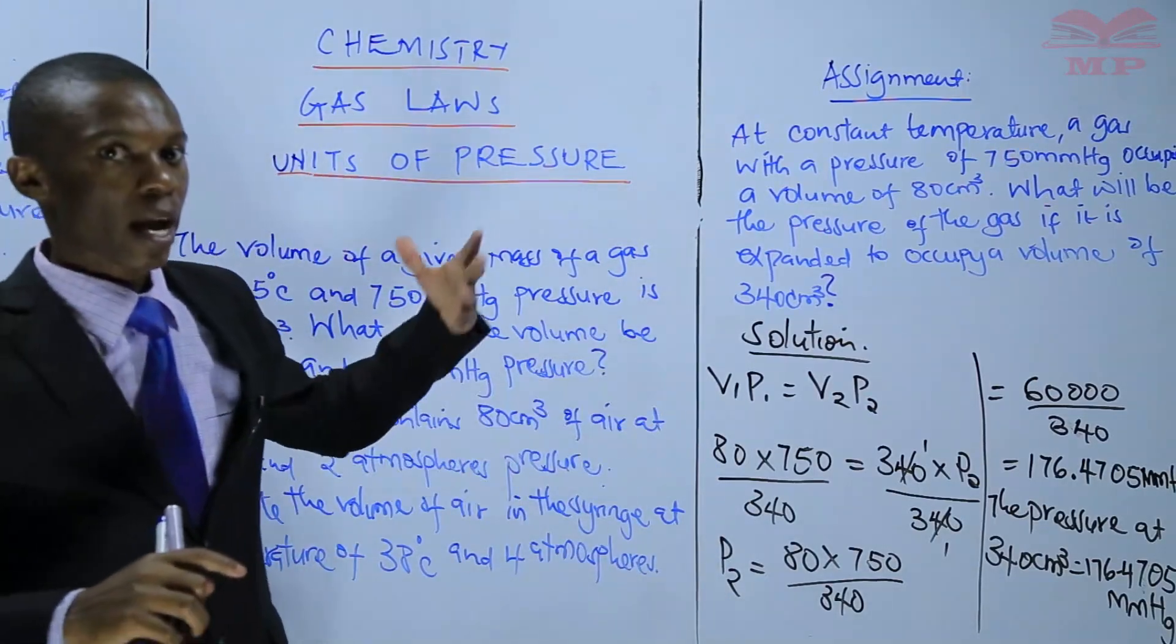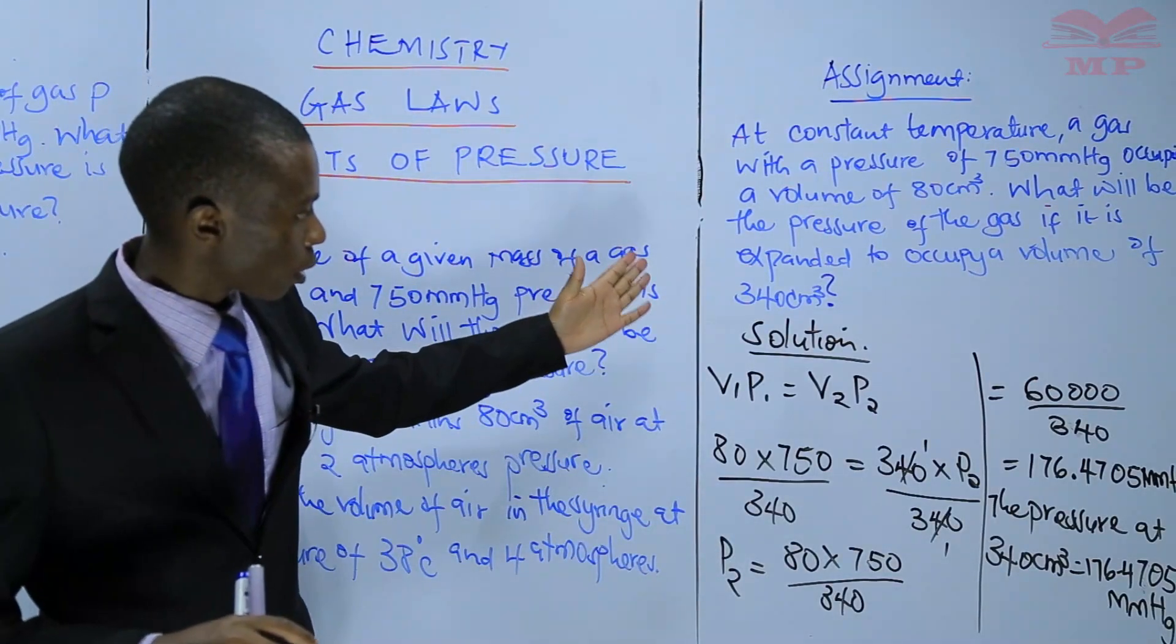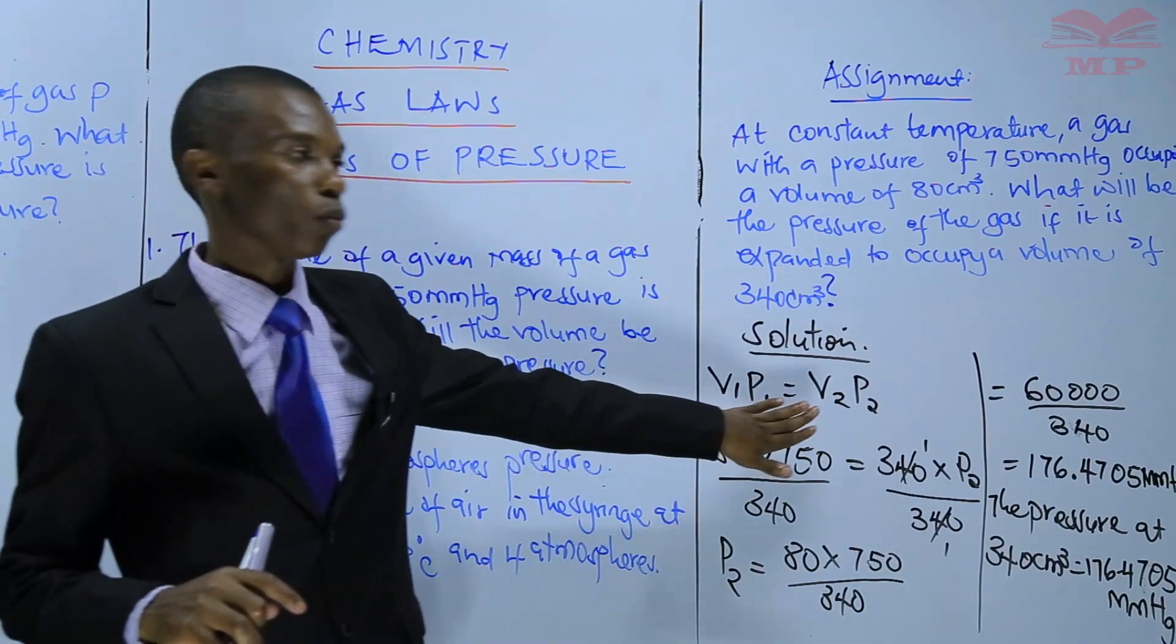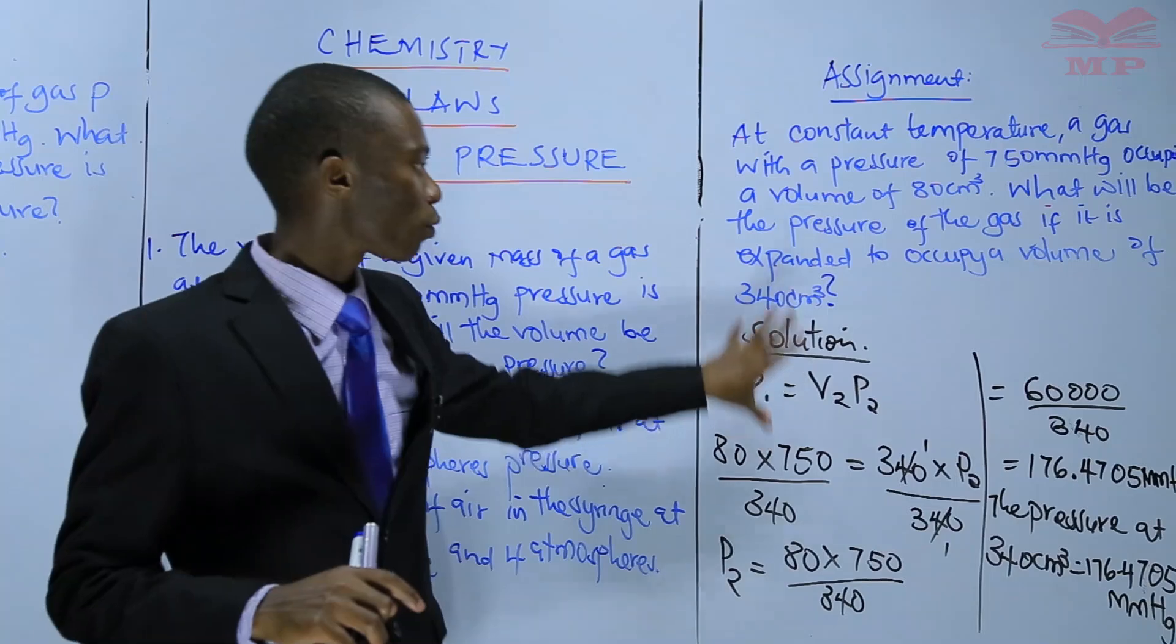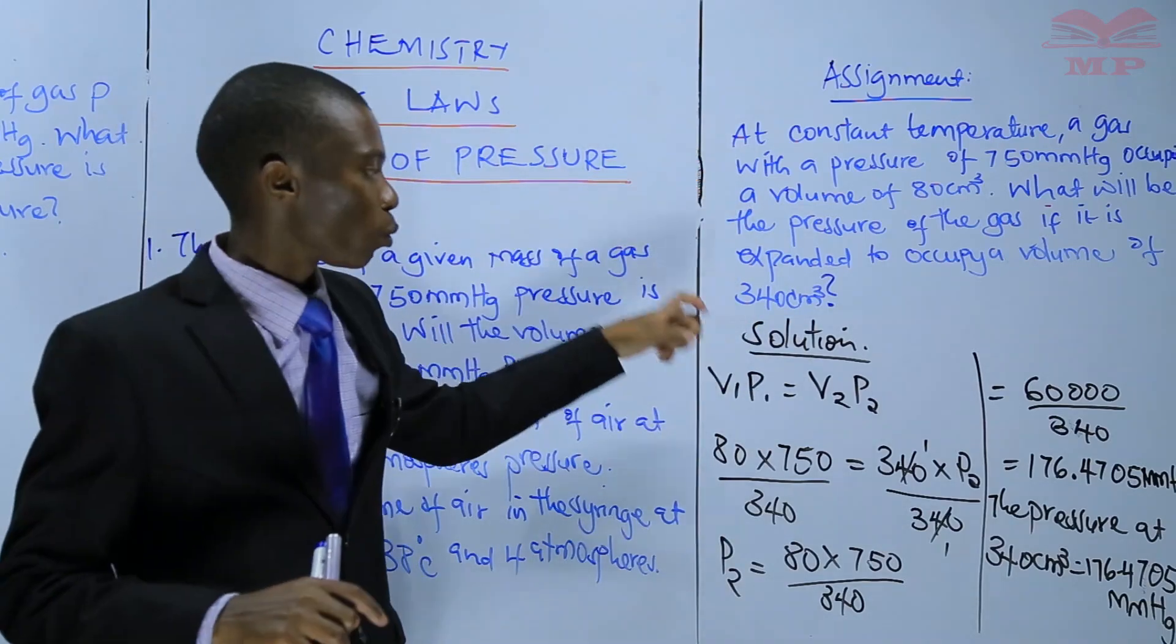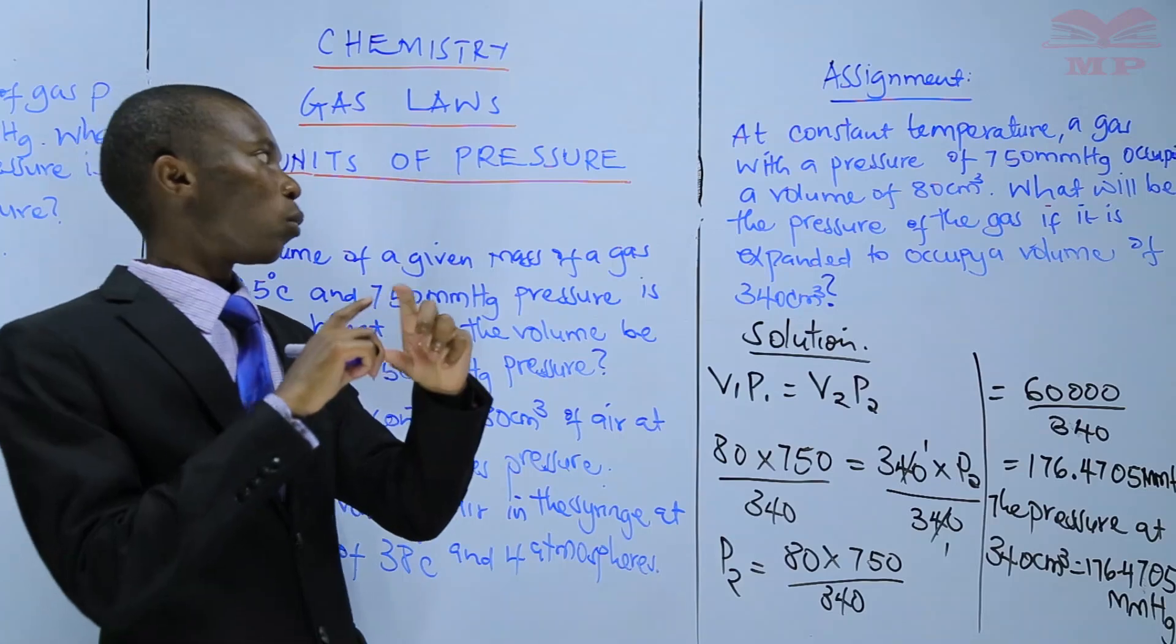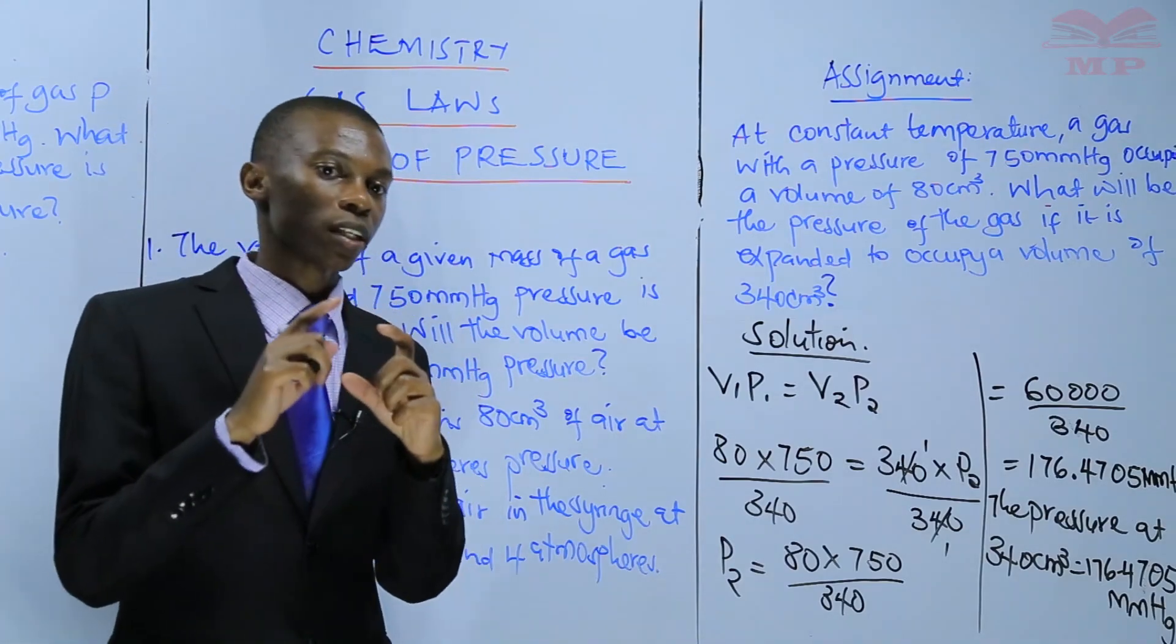Start with the formula, which is V1P1 equals V2P2. From there, you substitute whatever you've been given. Then you'll be left with whatever you need to calculate for that matter.